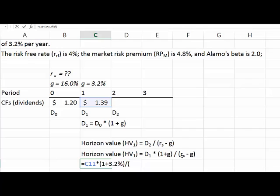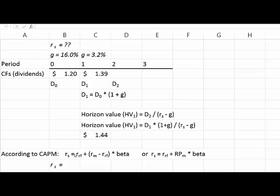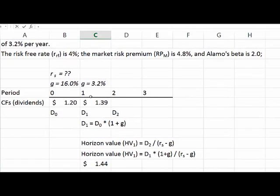Here is where we need RS. We don't have it, so we have to go to the CAPM equation and find RS. According to CAPM, RS equals risk-free plus return on the market minus risk-free times beta. Or, as in this case, risk-free plus risk-premium on the market times beta. We know that the risk-free is 4%.